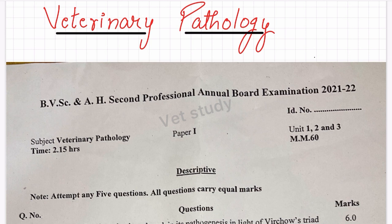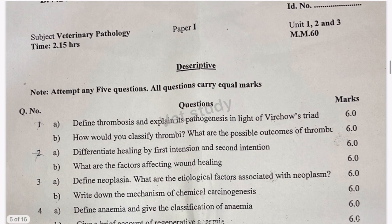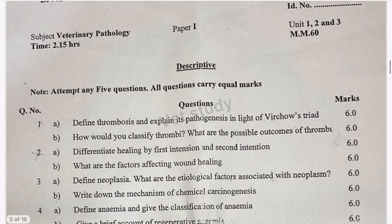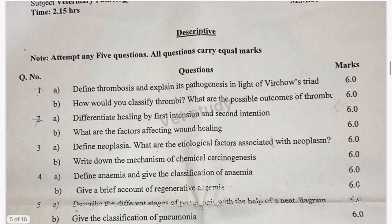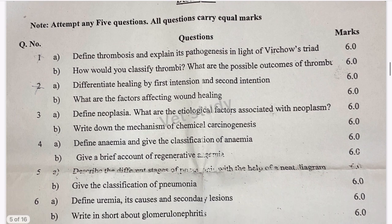So let's start with the important questions. I will discuss some papers first and then tell you about the important questions. This paper covers our units 1, 2 and 3. The most important topics are thrombosis — pathogenesis, classification and possible outcomes.